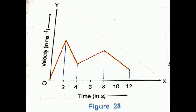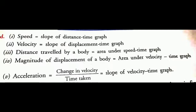After discussing all of this, we arrive at the following conclusions: First, speed = slope of the distance-time graph. Second, velocity = slope of the displacement-time graph. Third, distance travelled by a body = area under the speed-time graph. Fourth, magnitude of displacement of a body = area under the velocity-time graph. Fifth, acceleration = change in velocity / time taken, which can be obtained from the slope of the velocity-time graph.